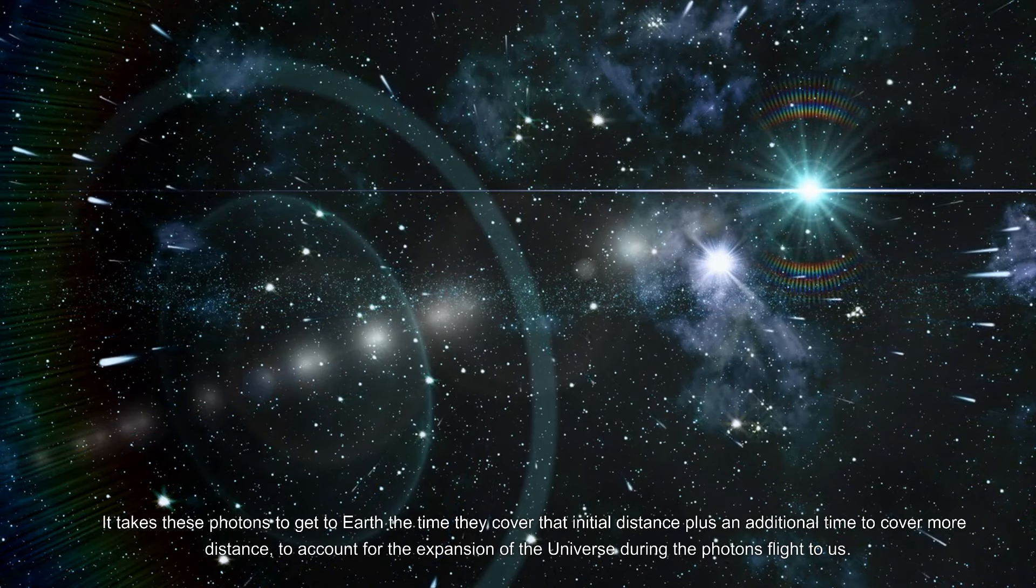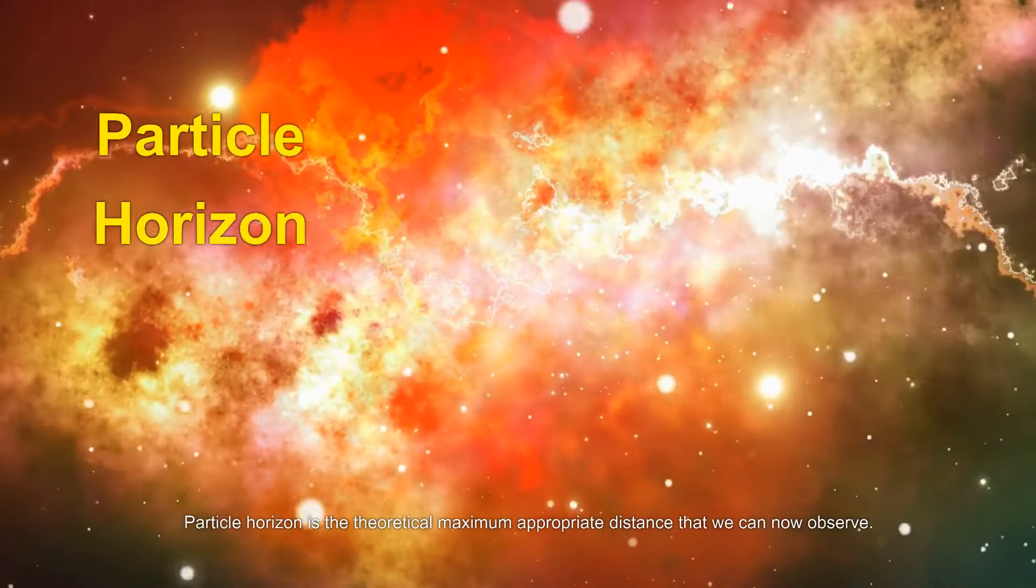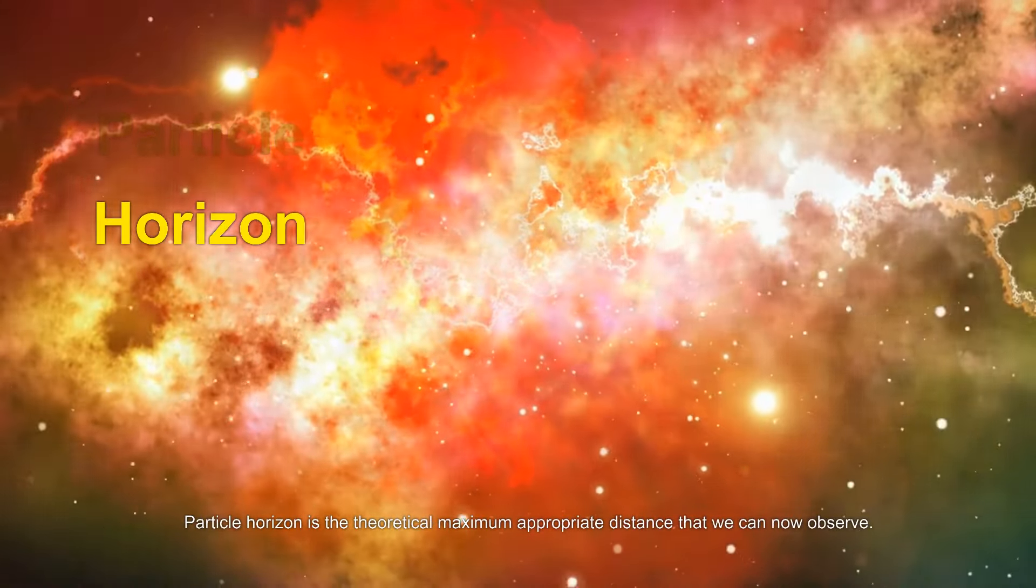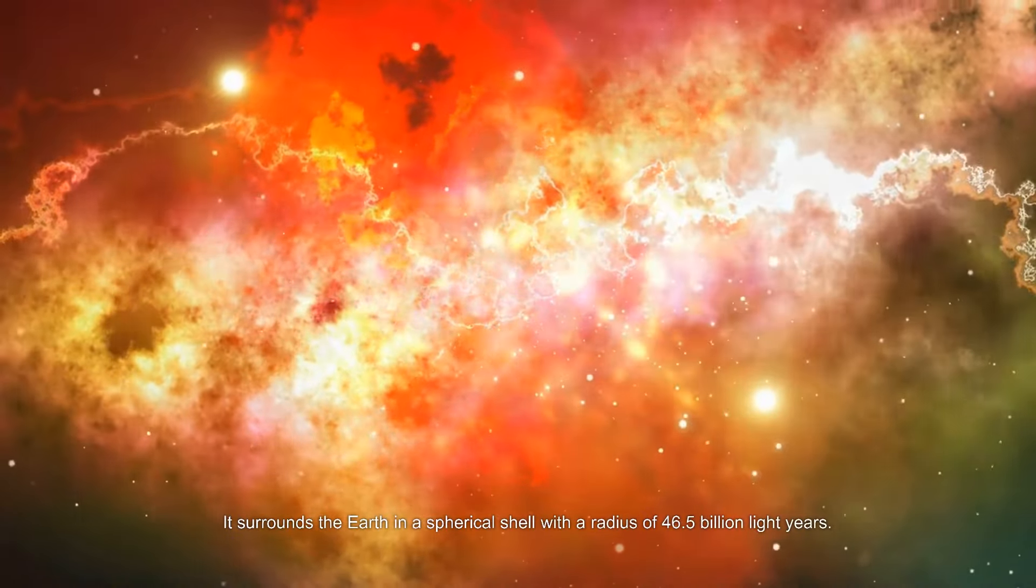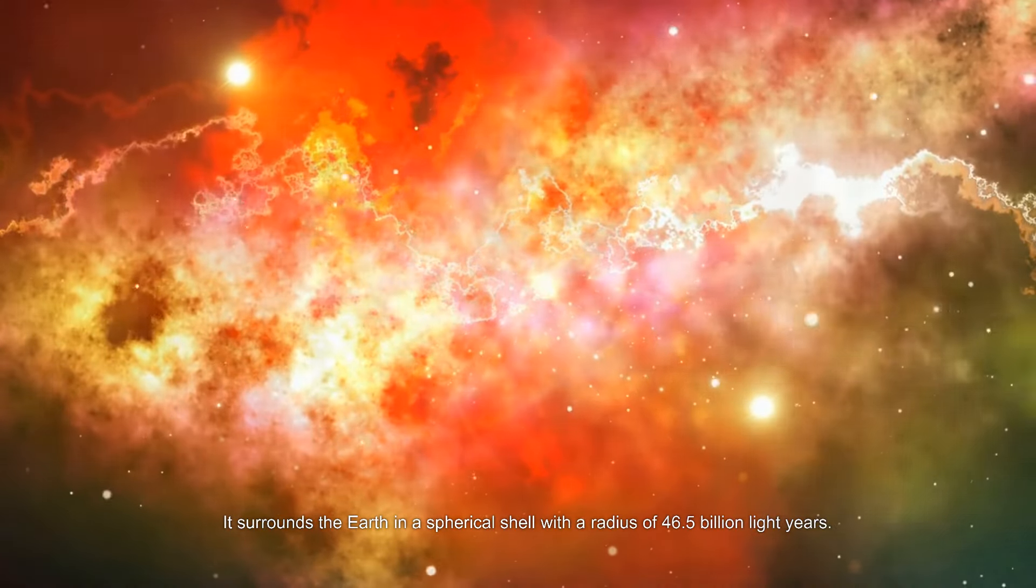The particle horizon is the theoretical maximum appropriate distance that we can now observe. It surrounds Earth in a spherical shell with a radius of 46.5 billion light years.